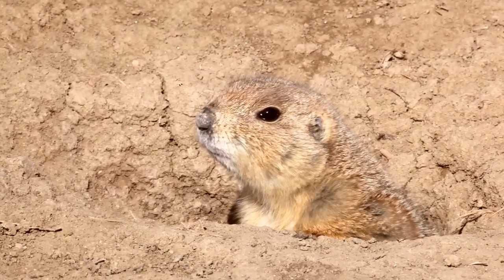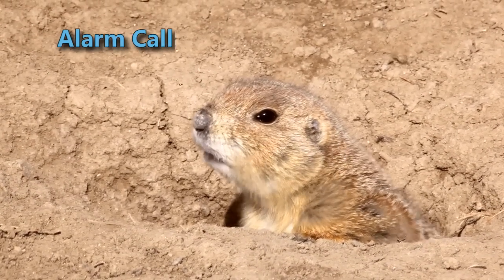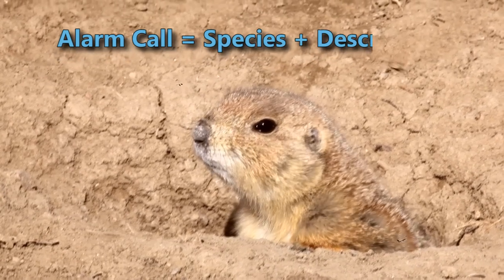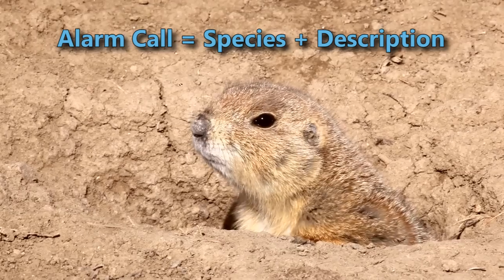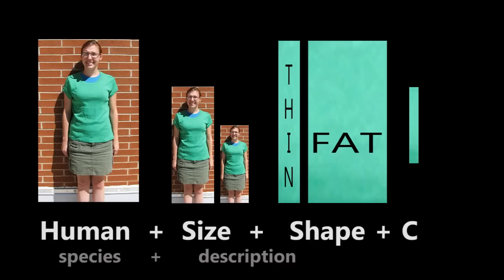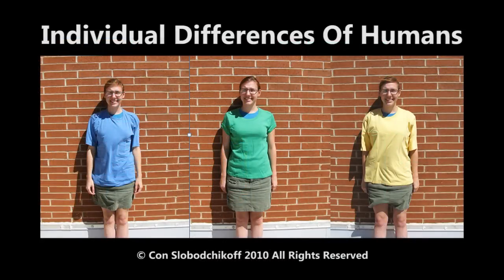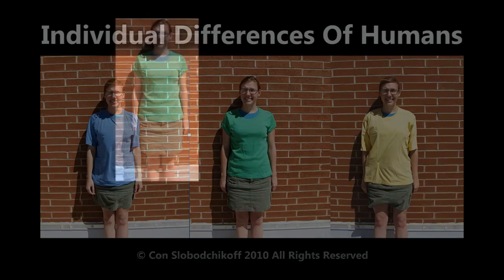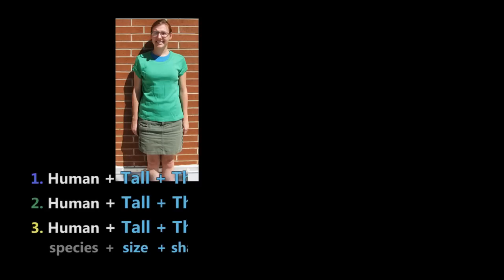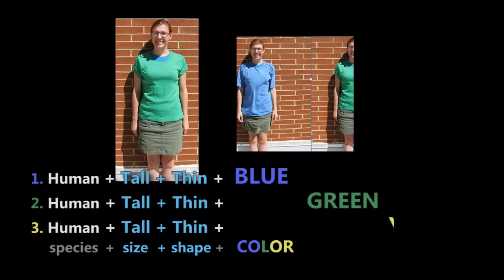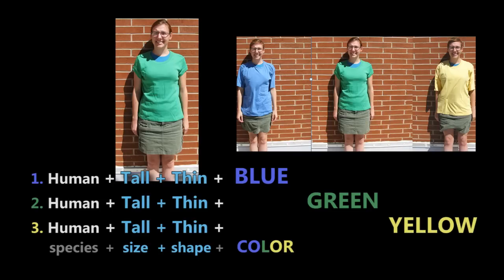We have also found that each alarm call contains information not only about the species of predator, but also contains information about the description of the individual predator. For example, a human alarm call contains information not only about the intruder being a human, but also contains information about the size, shape, and color of clothes that the human is wearing. When we do an experiment where the same person walks out into a prairie dog colony wearing different colored t-shirts at different times, the prairie dogs will have alarm calls that contain the same description of the person's size and shape, but will vary in their description of the color.